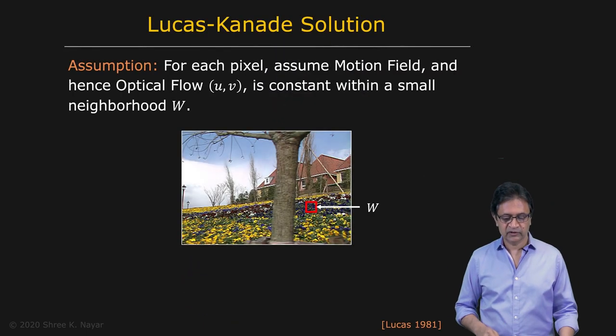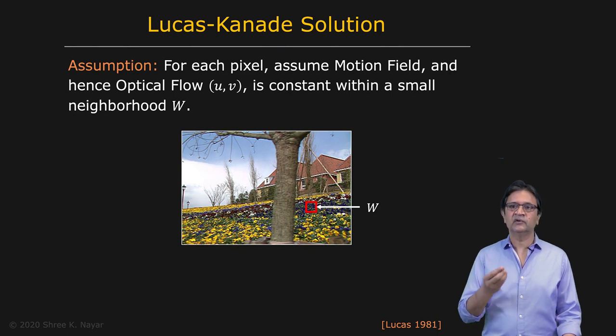So let's take a look at how that works. We're going to assume that for each pixel, the motion field and hence the optical flow is constant within a small neighborhood around that pixel, neighborhood W.